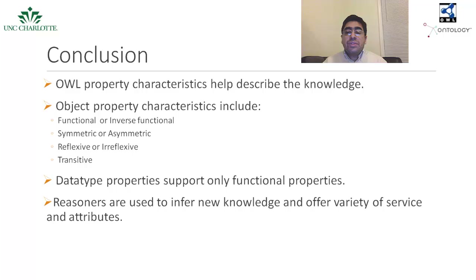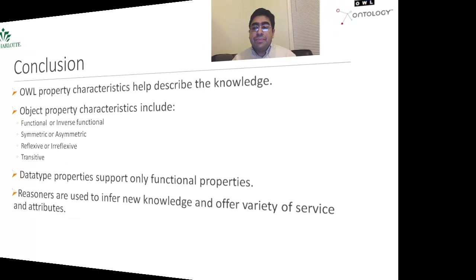In conclusion, we discussed different features of OWL properties and learned how these characteristics can be used to precisely describe knowledge. Object properties support a variety of characteristics as discussed in the lecture. Datatype properties connect individuals with RDF literals and can only be defined as functional. We also discussed different capabilities of ontology reasoners and covered a few of their services, examples, and attributes. Reasoners are used to infer new information by formally analyzing the available information.